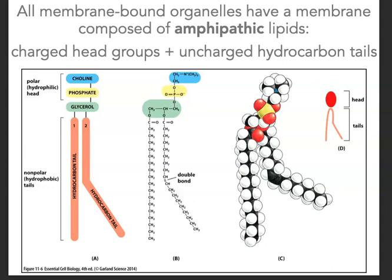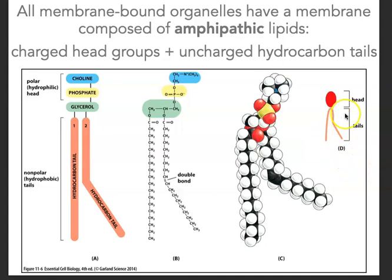Here you can see the most familiar depiction of the phospholipid on the far right, where we have a head group and two tail groups. This is characteristic of a phospholipid. There are other lipids with different structures — perhaps three tails or one tail. In some organisms, a lipid can have a head, two tails, and then another head connected to the other end of the tails.